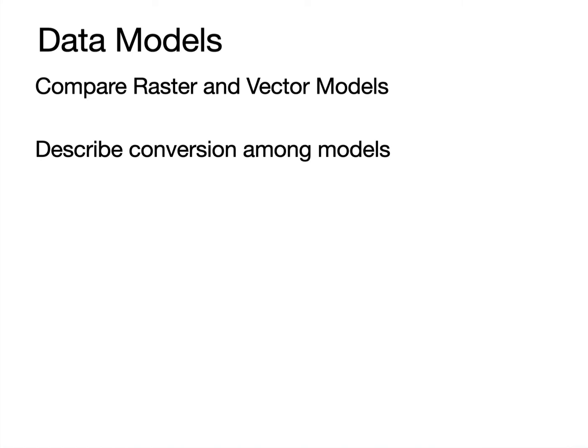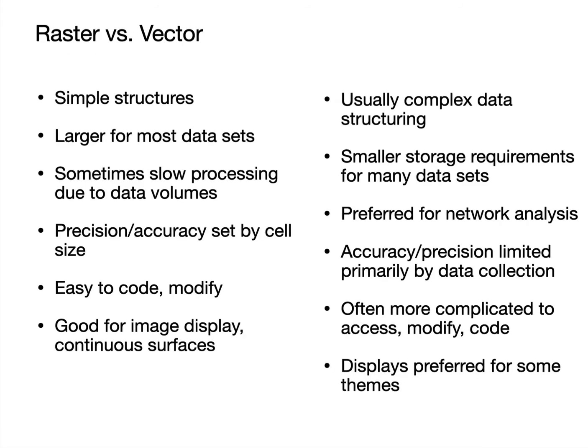I would like to compare raster and vector data models and describe conversions between these two models. Why use raster versus vector? That choice is largely driven by the likely most common uses of the data. If the data have a structure that is inherently representing a linear network feature, you want to use a vector data set. If it's a continuous surface, you want to use a raster data set. There are data sets that are somewhere in between — land cover can be stored as either raster or vector.